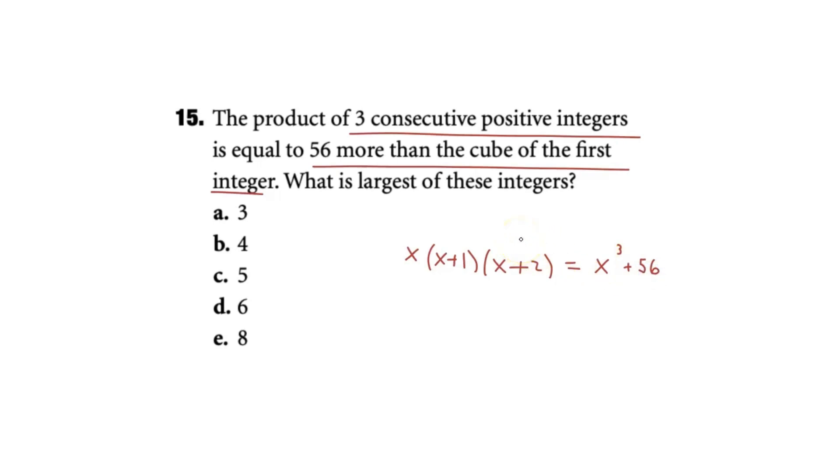So what is the largest of these integers? We can just find the value of x, and if we find the value of x and add 2 to it, that would be the largest of these integers. x times x plus 1 times x plus 2 simplifies to x cubed plus 3x squared plus 2x, and this would be equivalent to x cubed plus 56.